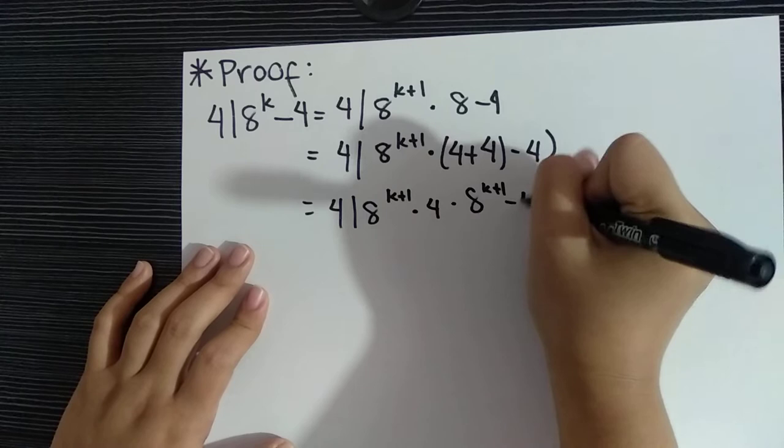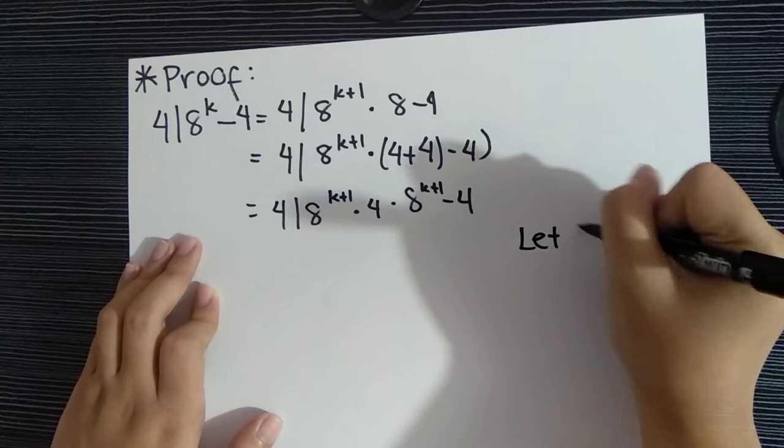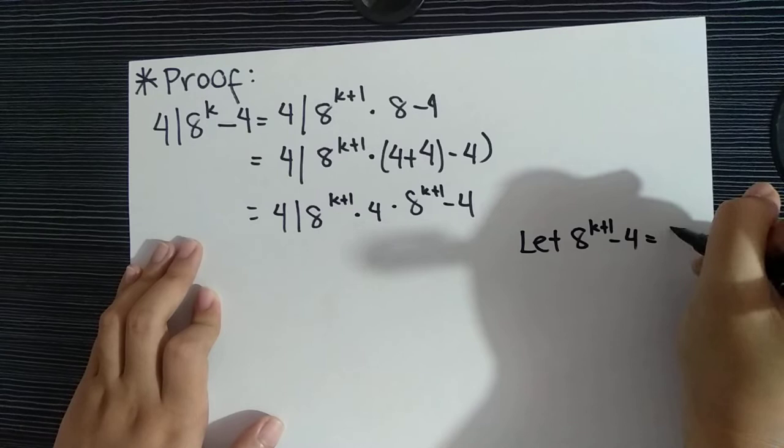Now we will let 8^(k+1) - 4 be equal to 4q.